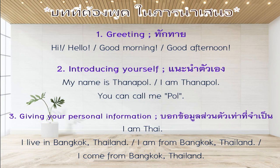Give only the necessary personal information. First, tell them you are Thai: I am Thai. Then say where you live: I live in Bangkok, Thailand. Or you can say: I am from Bangkok, Thailand. Or: I come from Bangkok, Thailand. Note: do not say I am come from Thailand — that is incorrect.